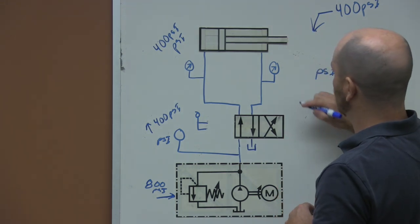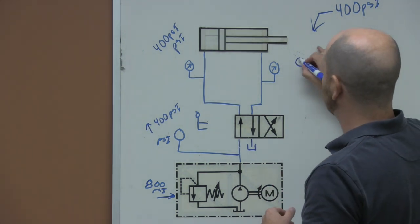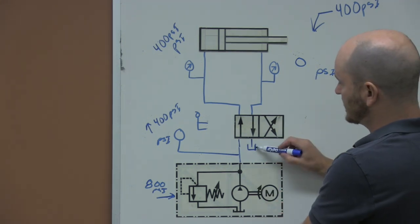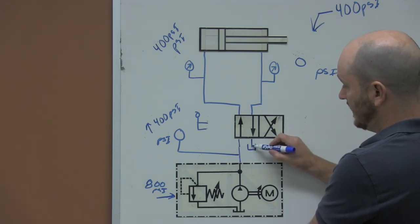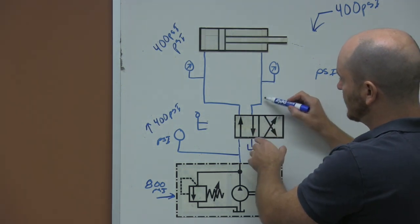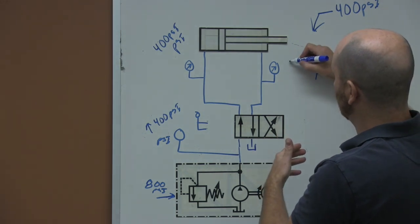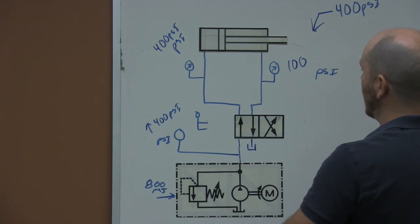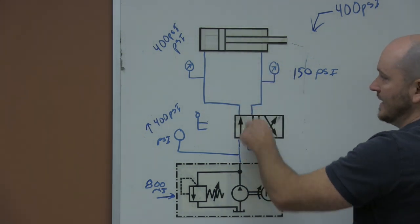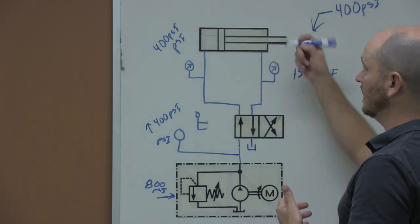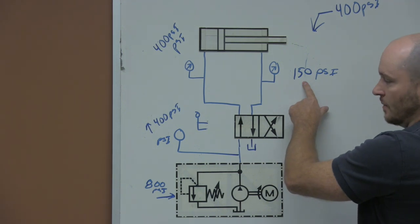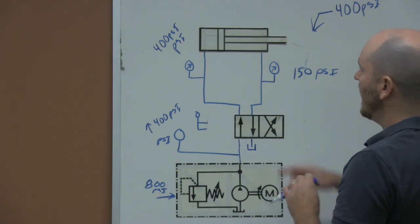Some people would say you should have zero psi on the return side. That's true and it's not true. Theoretically it's exposed to atmosphere, so you'd have zero psi at the tank, but not right at the cylinder port. You would actually have whatever pressure is needed to return the oil through that line back to tank — maybe 100 to 150 psi. That's the pressure needed just to get back to tank depending on pipe size, rod thickness, and distance. This is not functional pressure; it's just the energy required to overcome internal resistance getting back to tank.